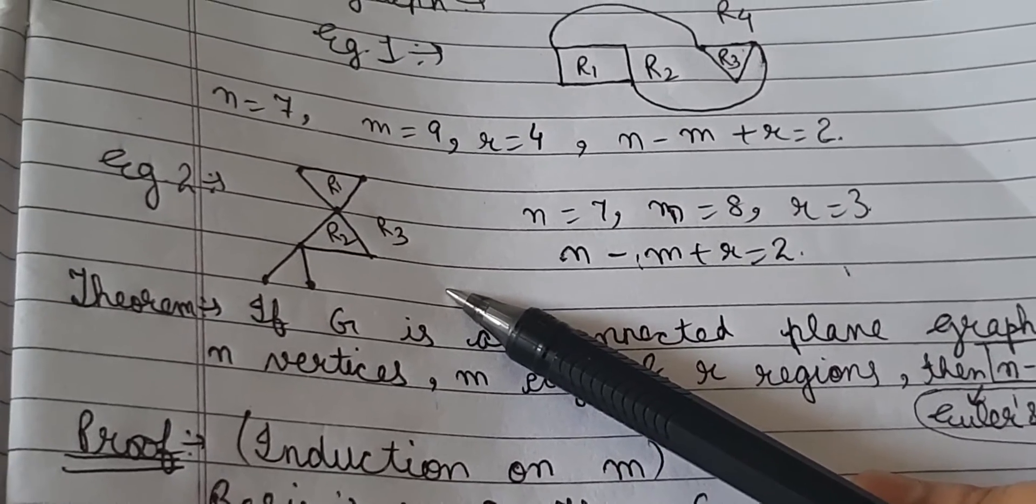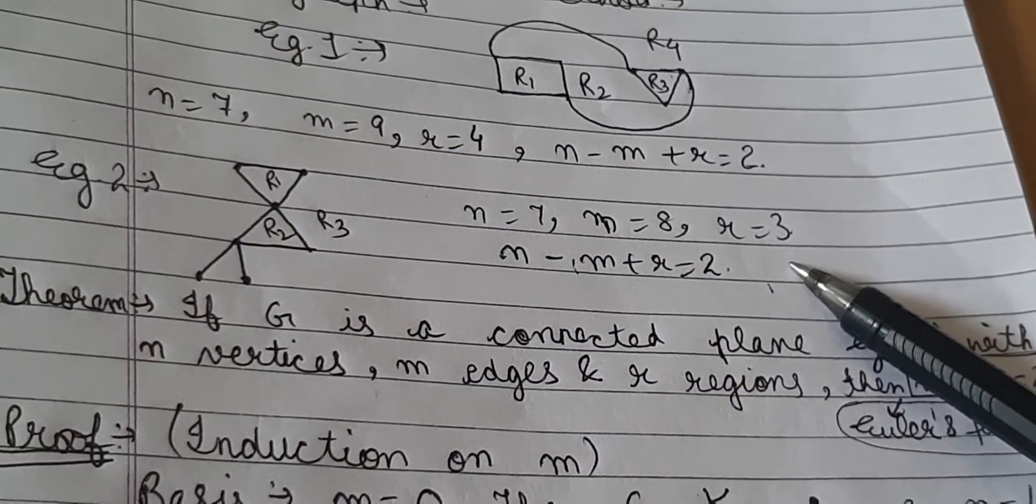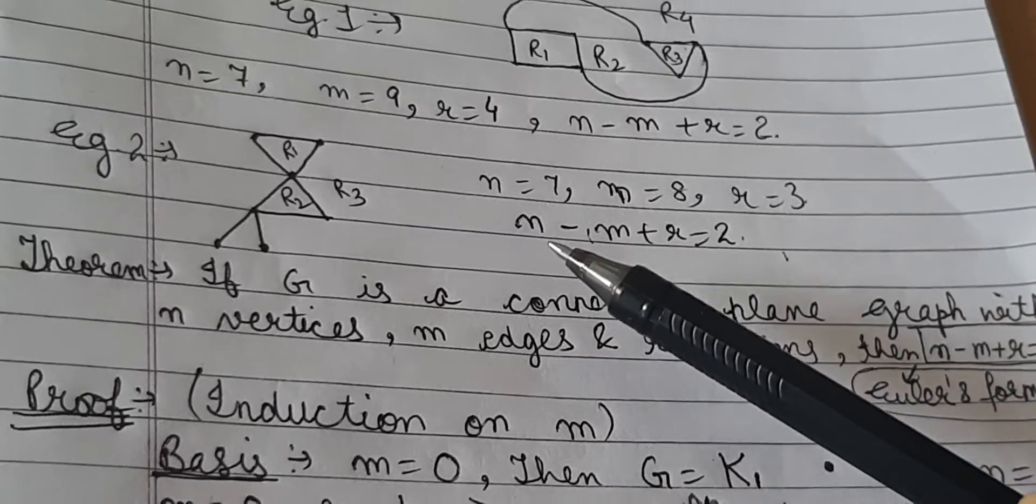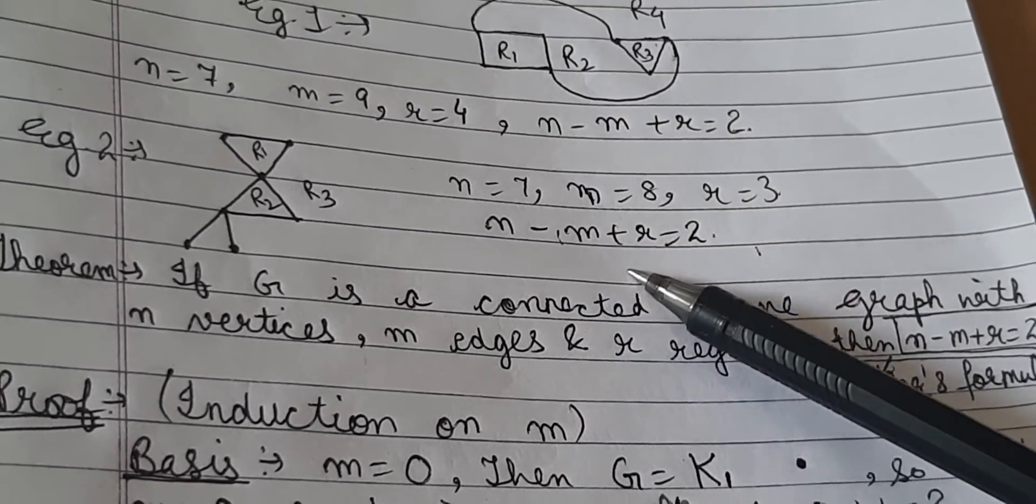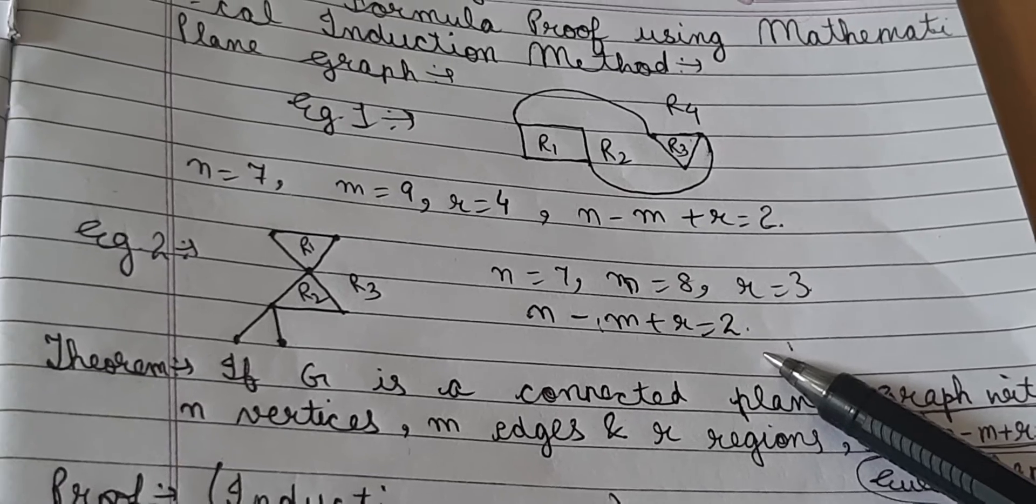Let's try another example. This plane graph has 7 vertices, 8 edges and 3 regions, and again we notice that number of vertices minus number of edges plus number of regions equals 2. This is not just a coincidence.